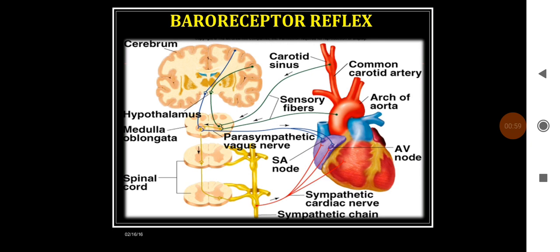Whenever there is an increase in the blood pressure, these baroreceptors are stimulated. The information is brought to the cardiovascular regulatory centers through the Hering and vagus nerve. The information is processed by the sensory area called nucleus tractus solitarius, which in turn facilitates the cardiac inhibitory centers and inhibits the vasomotor center. Inhibition of the vasomotor center leads to decreased blood pressure, and facilitation of the cardiac inhibitory center increases the vagal tone, which reduces the blood pressure.